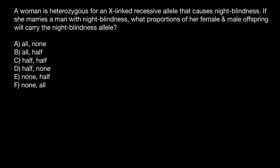Let's analyze our problem. The woman is heterozygous for an X-linked recessive allele, so let's put her genotype on the side of the Punnett square. One X chromosome would be normal, and the other chromosome would be abnormal — we'll show it in red. She marries a man with night blindness. Since this is an X-linked recessive genetic disorder, males have only one X chromosome, so they are affected because they don't have another X chromosome to offset the effect of this recessive allele.